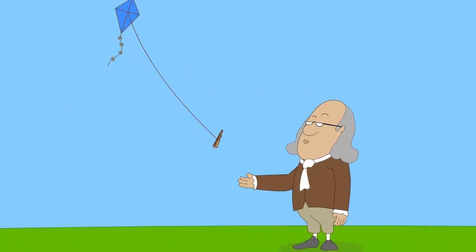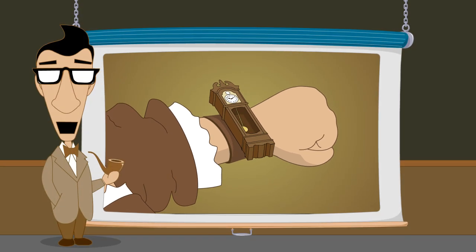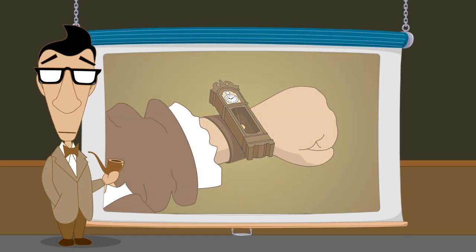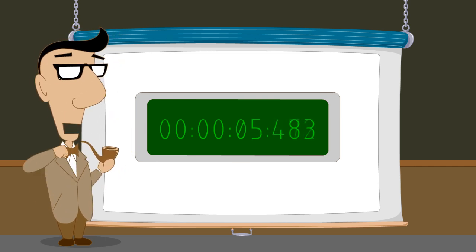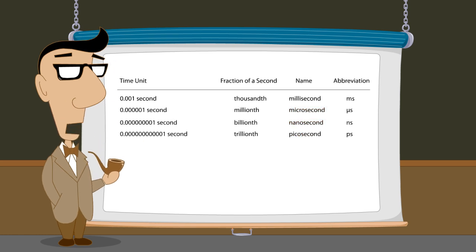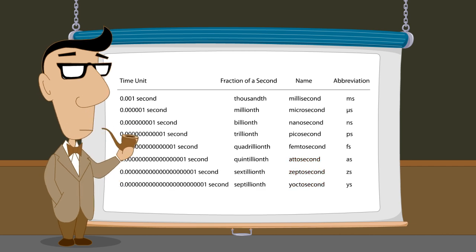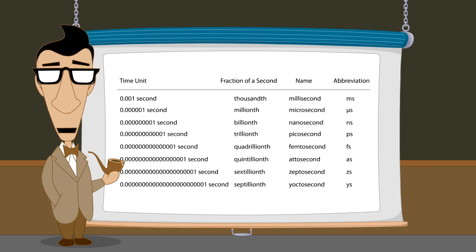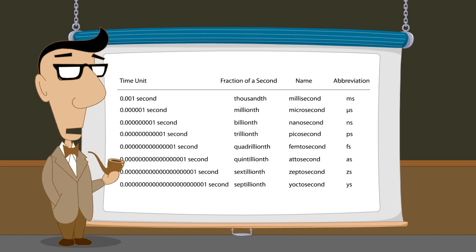Hundreds of years ago, time measurements much smaller than a second would have been difficult or impossible. Today, engineers and physicists routinely work with measurements of tiny fractions of a second. In fact, we now have names for these units like millisecond, microsecond, nanosecond, picosecond, femtosecond, attosecond, zeptosecond, and yoctosecond. Unfortunately, numbers with lots of zeros can become confusing and hard to work with. This is why scientific notation was invented.